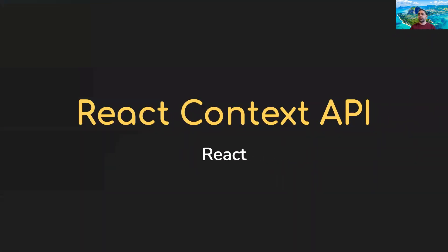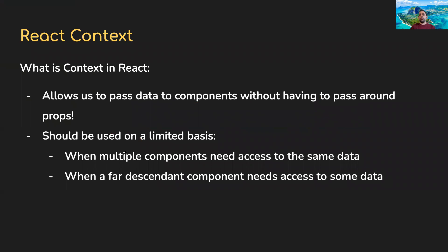All right, React Context API — what is context within React? React context lets us pass data across components without having to use props. Props are what we've been using so far, where we want to pass certain values from a parent component down to a child component.